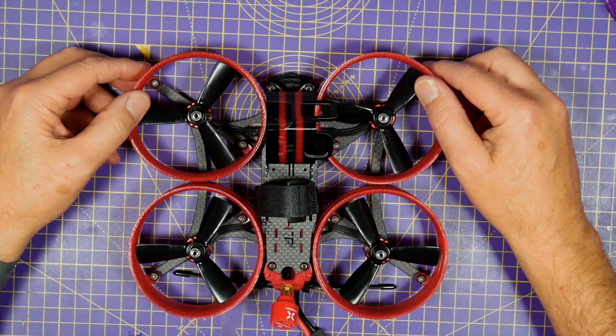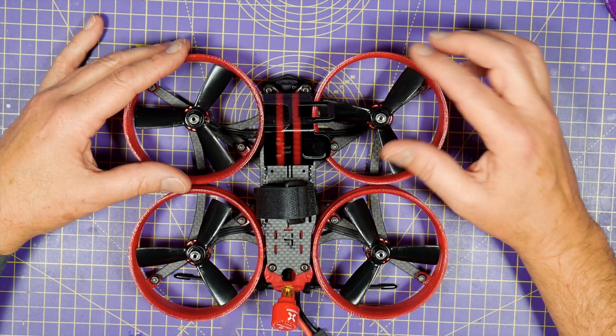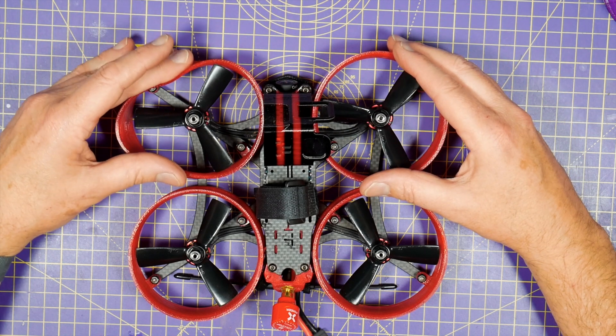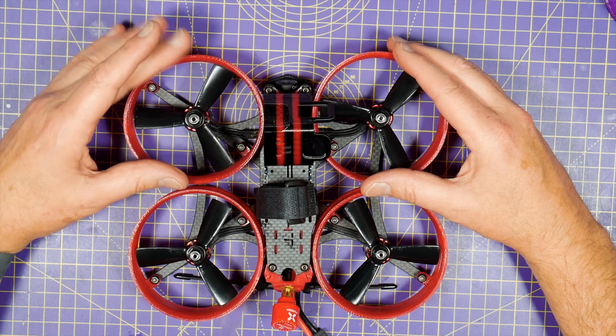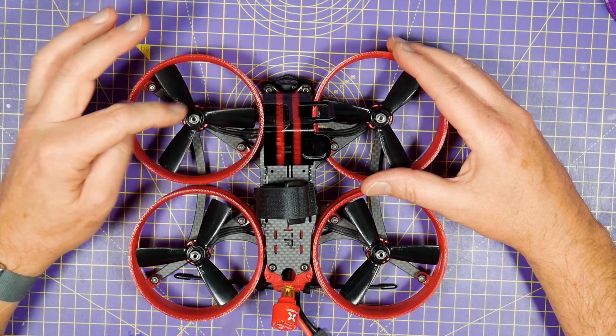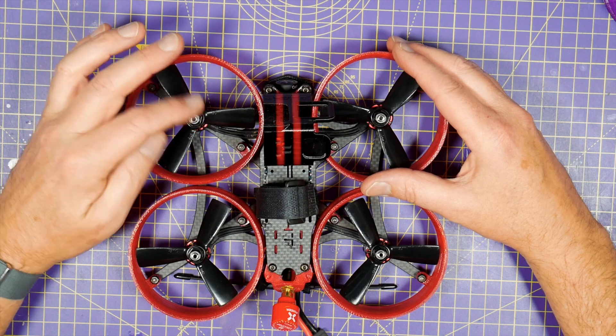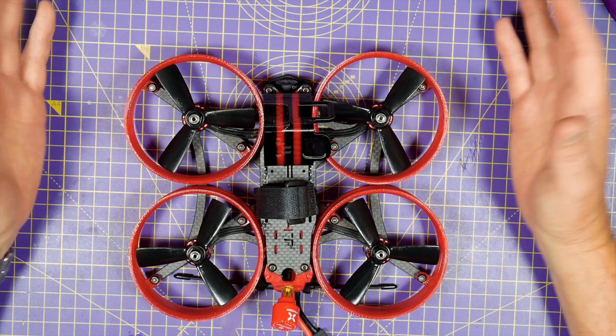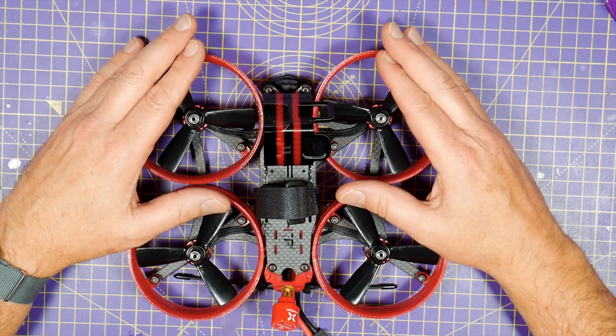And now you've got flexible ducts you need to be careful if you crash or hit something. They will flex and they flex into the prop and it may make the prop catch and stall. Which means you could burn the motor or the ESC out. So if it gets all noisy because it's rubbing land and disarm straight away. This is exactly the same as you need to do on the squirt.